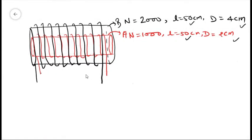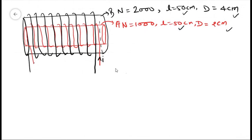So we need to find the mutual inductance. Let's say the current flowing in the inner solenoid A is I. So what is the magnetic field produced in this region? The magnetic field is simply B equals μ₀NI. And we can simply use this because the length is much greater than the radius, so this is applicable here.